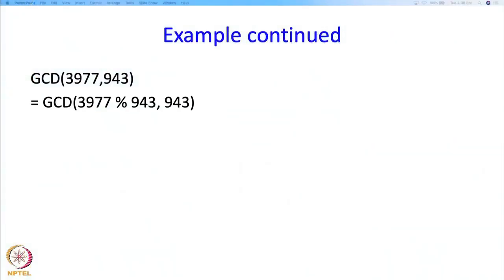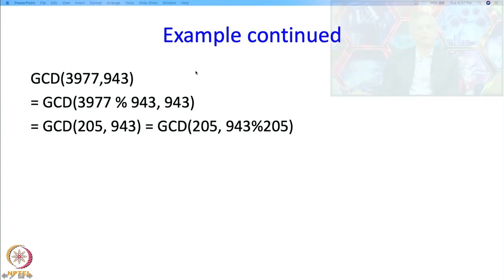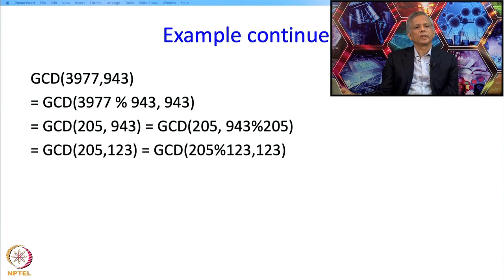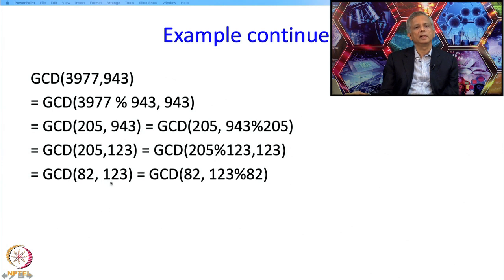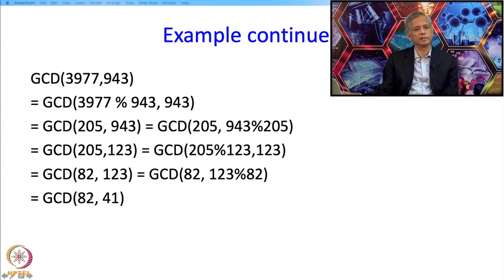So now we can go and do that problem again. So GCD of 3977, 943 is equal to 3977 mod 943. So we have got GCD of 205 and 943 mod 205. That is 205, 123 but again the same idea 205 mod 123, 123 so that is 82, 123. 82, 123 is 82 and that is GCD of 82 but now if we take 82 mod 41, we see that 82 is a multiple, 41 divides 82. So that means 41 must be the GCD. Because 41 divides 82, so 41 must be the GCD of this but the GCD of this is the GCD of all the way back. So we have found the GCD of 3977 and 943 and that happens to be 41.